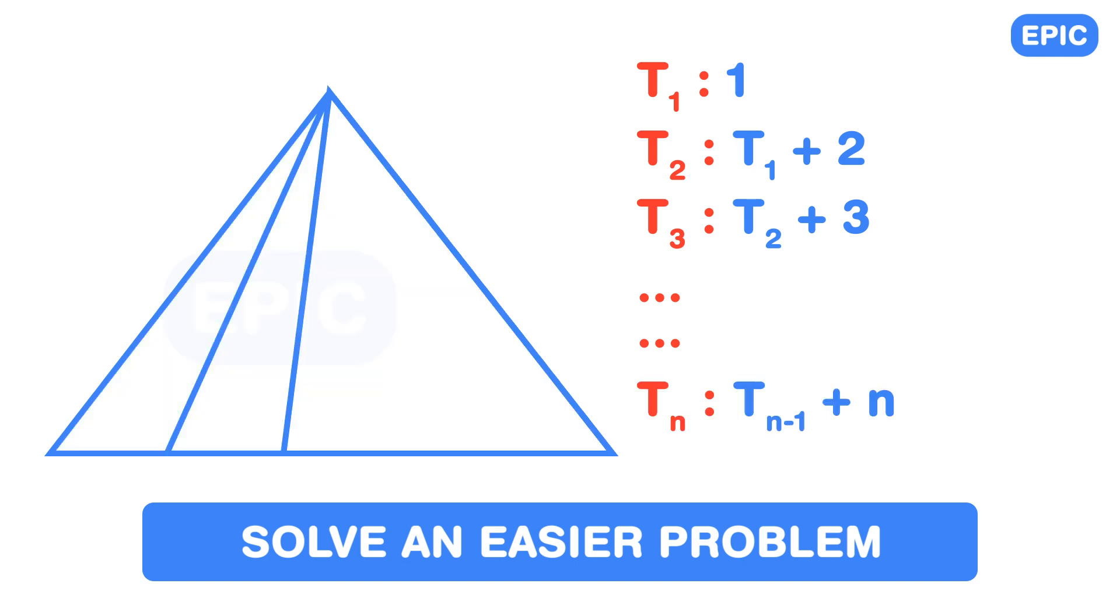Tn will be Tn minus 1 plus n. This series is basically the sum of first n natural numbers. As we know, this sum will be n into n plus 1 divided by 2.